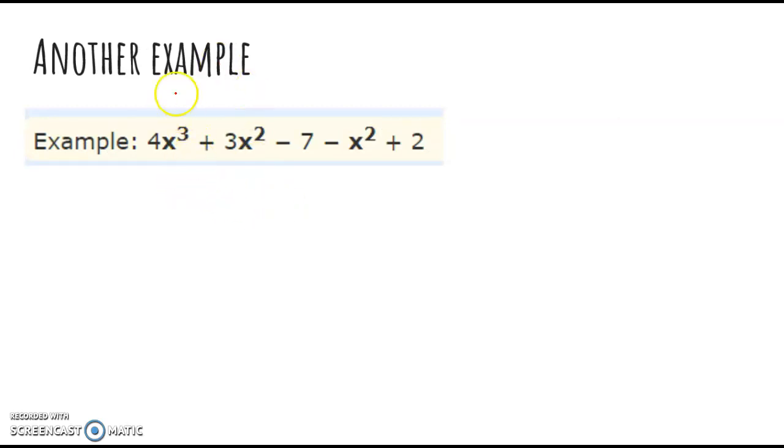Here's another example. We want to get our like terms together. So we're going to start with the highest one, which is 4x cubed. Do I have any other x cubes? No, I don't. So that stays the same. Now let's go to our next highest one, which is our x squared. So find all the x squareds. And we're going to combine the coefficients, which is 3 minus 1. 3 minus 1 is positive 2. So that's plus 2x squared.